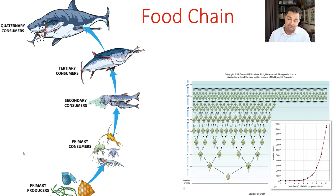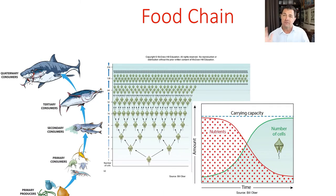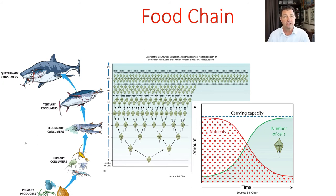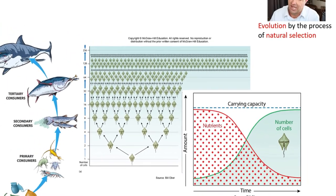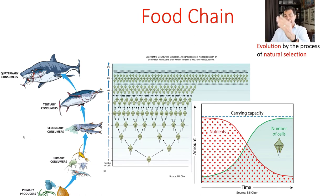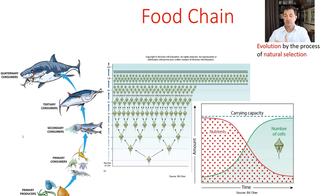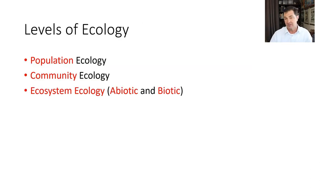As predators eat certain dinoflagellates and not others, as you run out of nutrients and space, certain individuals are going to make it and others aren't. The ones with the best genetics for whatever reason are going to be the ones that survive — that's a very good example of evolution by natural selection. Over time, even though they're still dinoflagellates, certain genes related to getting nutrients or reproducing are passed on, and that's how a population changes over time.